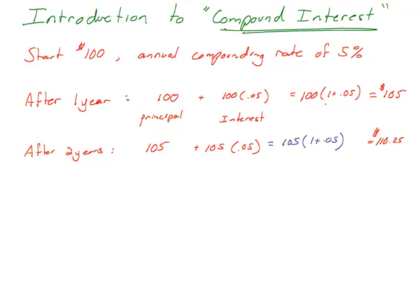But the other thing I notice is I can put in what 105 is here. If I do that, that 105 was 100 times (1 plus 0.05). And that's my 105, so I still have to multiply that by (1 plus 0.05). Well, now I see something I can do here. I've got the same base.